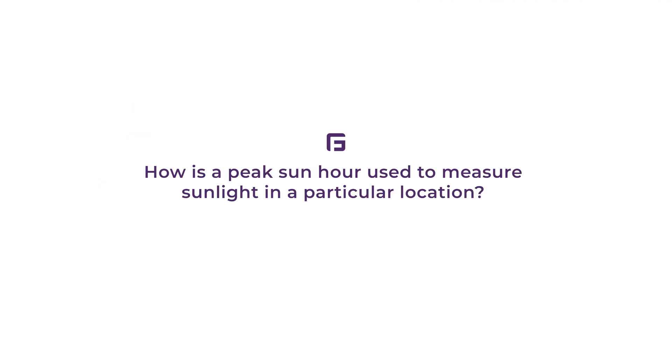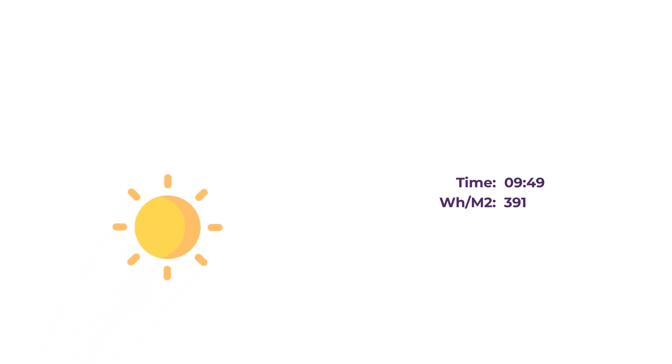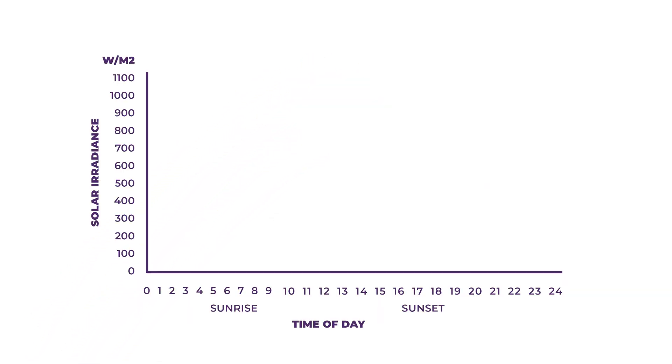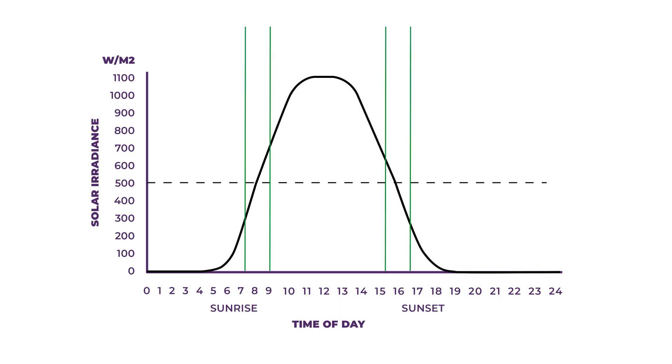How is a peak sun hour used to measure the sunlight in a particular location? Peak sun hours can also be used as a cumulative measure of the fluctuating sunlight levels throughout the day. 1,000 watts per square meter is a lot of sunlight, and that intensity is likely to only occur at the height of the day. For example, the sun might shine at an intensity of 500 watts per meter squared in the morning and afternoon.